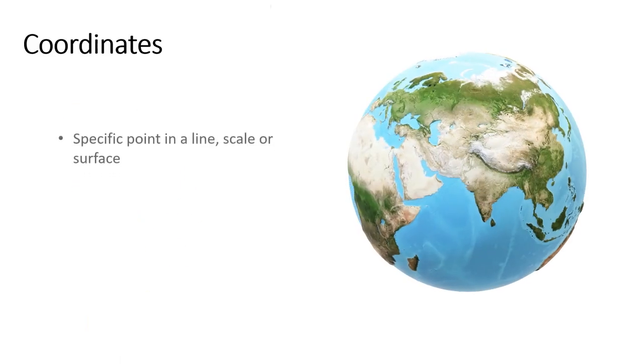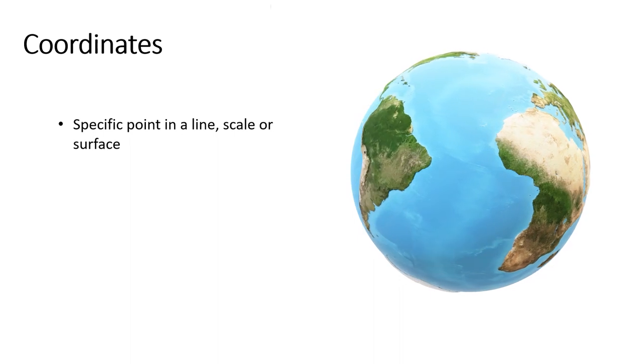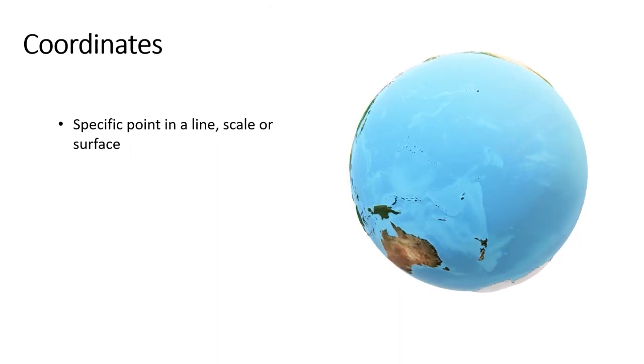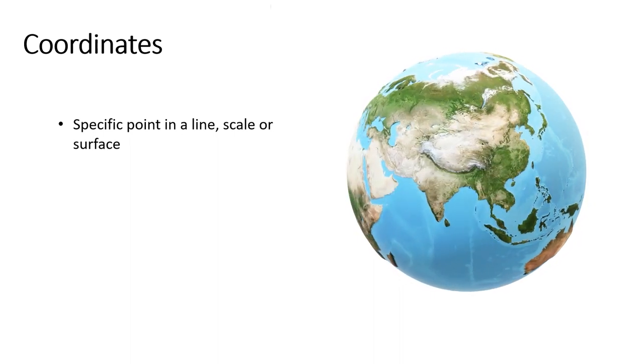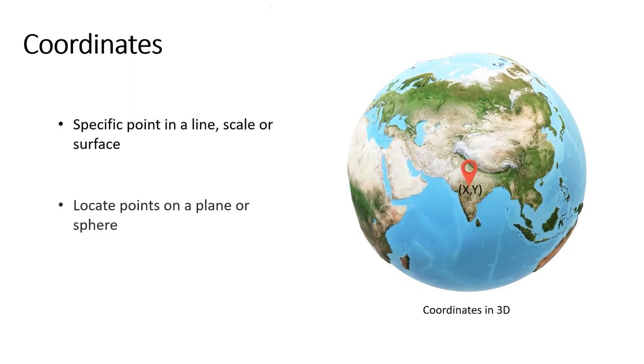Coordinates are ordered pairs of points that help us locate any point in a 2D plane or 3D space. A coordinate system is used to express the location of a point on a plane or sphere.